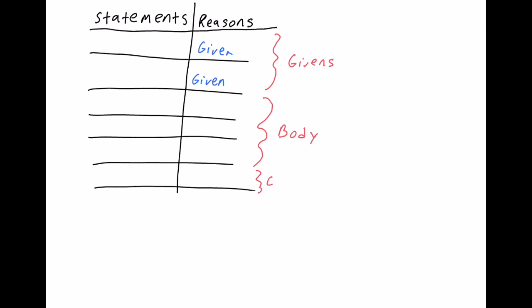And then the final part is the conclusion, which usually is only one line. In the conclusion is where you will say that, in this case, the two lines are parallel — though they may be looking for something else. Your end statement will probably look something like 'BD is parallel to AC,' and then your reason will probably be 'corresponding angles' or something to that effect — one of the theorems we just learned about in the last few classes.